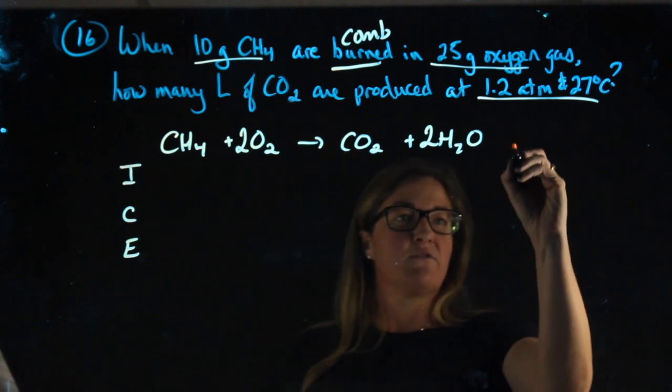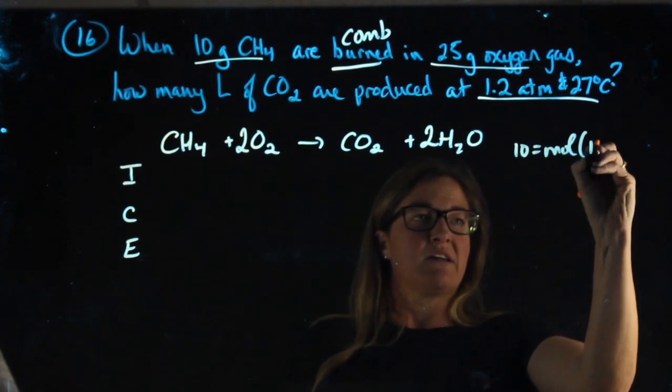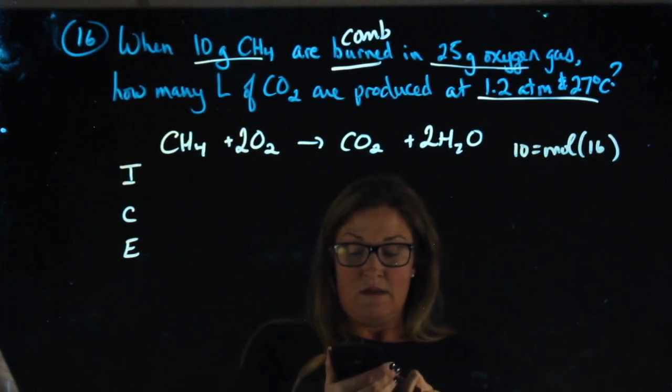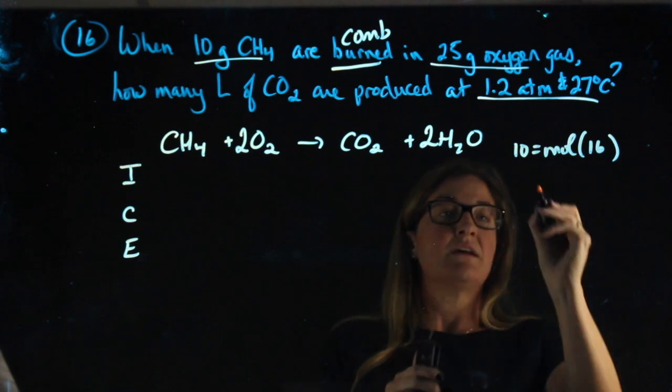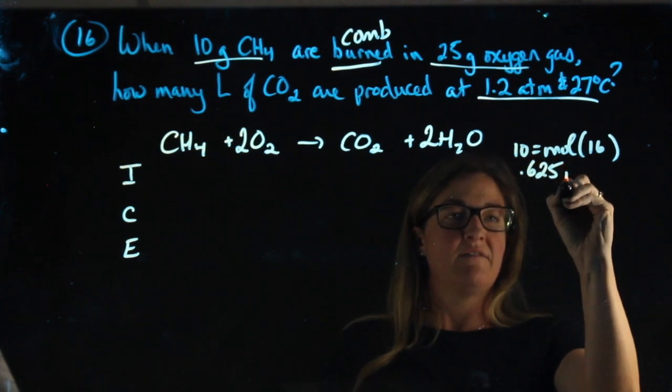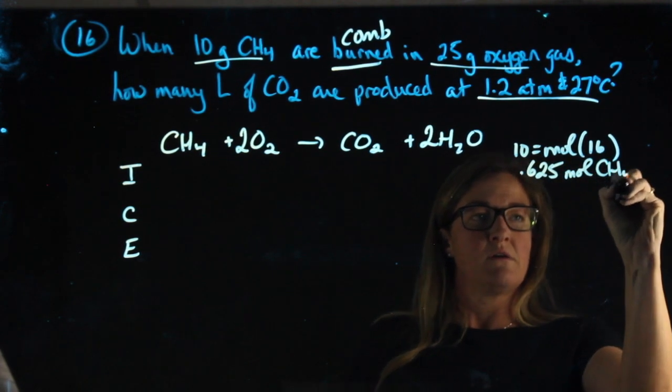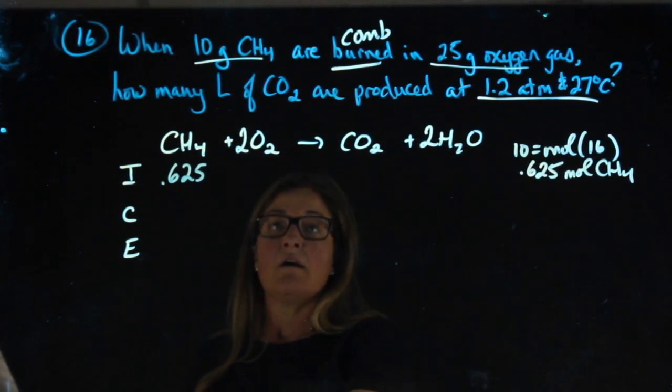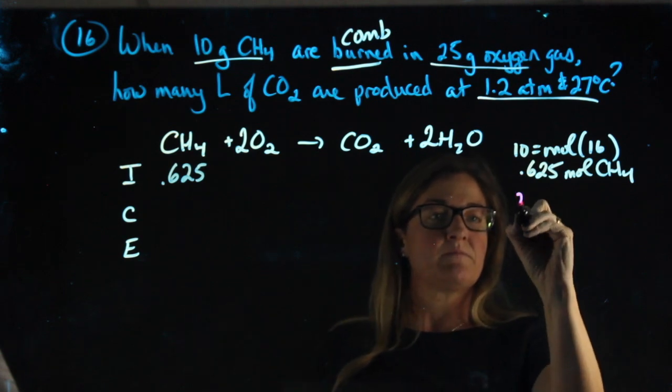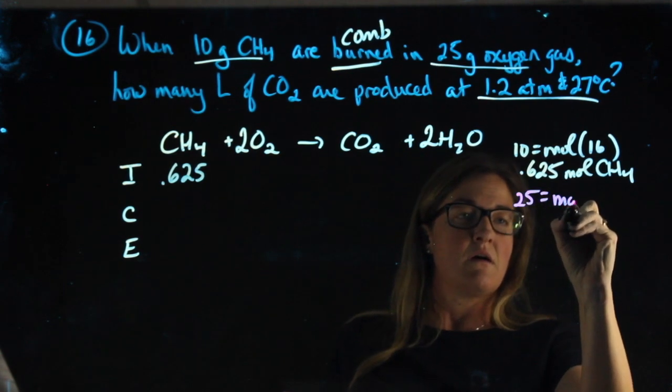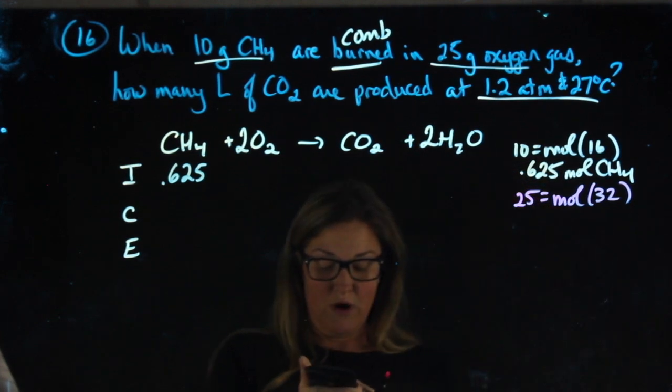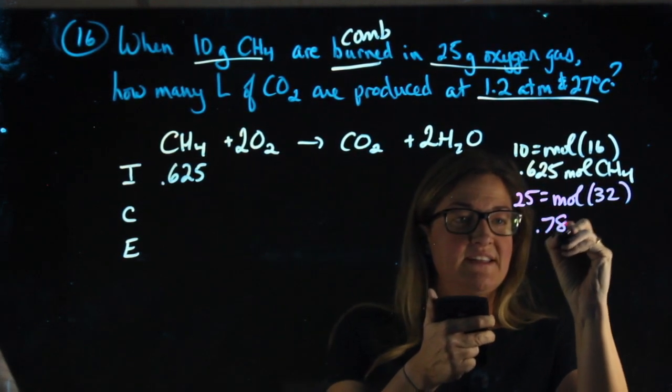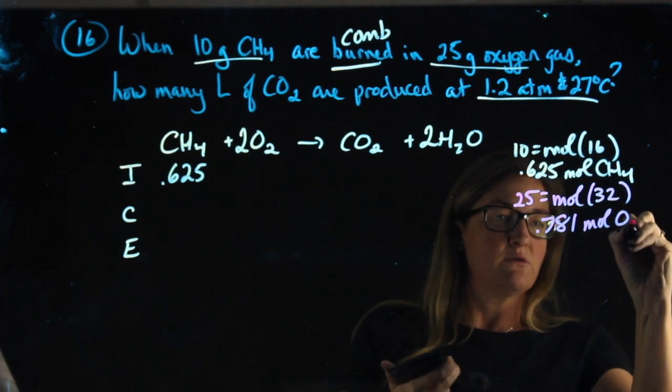So I have 10 grams of CH4, CH4 has a molecular weight of 16. 10 divided by 16 is 0.625 moles of CH4. For the moles of oxygen, oxygen's diatomic has a molecular weight of 32. 25 divided by 32 gives me 0.781 moles of O2.